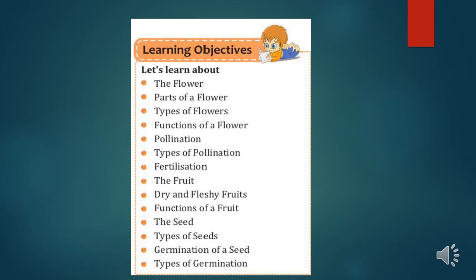Learning objectives in this video are: the flower, parts of a flower, types of flowers, functions of a flower, pollination, types of pollination, fertilization, the fruit, dry and fleshy fruits, function of a fruit, the seed, types of seeds, germination of a seed, and types of germination. All these topics we will study in this video.